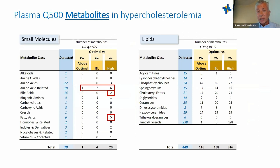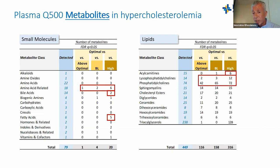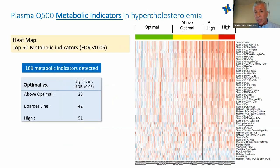Looking at compound classes in the stratification analysis: amino acids are affected, particularly in the very high cholesterol group. For lipids, a high number of acyl carnitines are affected in the very high LDL-C group, as well as lysophosphatidylcholines, phosphatidylcholines, sphingomyelins, ceramides, hexaceramides, trihexacylceramides, and a large number of triacylglycerols showing strong significance.